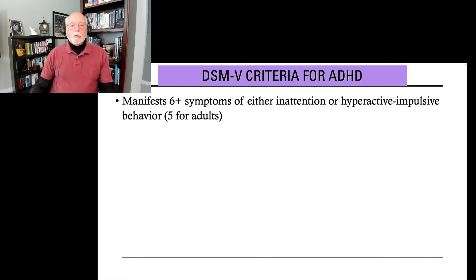One other noteworthy change: prior to DSM-5, you could not diagnose autism spectrum disorder with ADHD — they were considered exclusive disorders. That was a mistake. It was corrected in DSM-5, and now you can give both diagnoses. A very important change to the DSM-5 criteria.